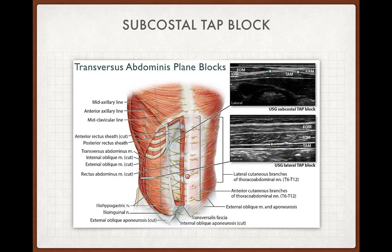For subcostal TAP block, place the probe just lateral to the midline below the costal margin. You will find the rectus abdominis muscle first; just below its lateral edge you will find the transverse abdominus muscle. Start injecting drug just above the transverse abdominus muscle. Going laterally, you will also find the external oblique and internal oblique muscles. Dissect the TAP plane medial to lateral throughout to block T7, T8, and T9. This provides analgesia for surgeries like open cholecystectomy or upper abdominal surgery. Combined with conventional TAP block, it covers almost the entire abdomen.